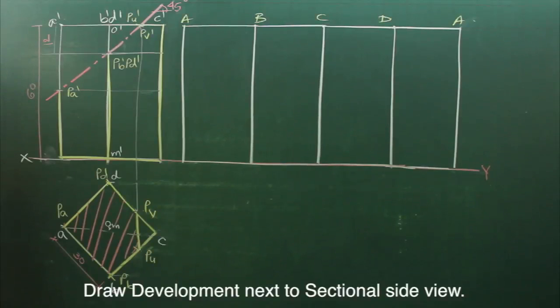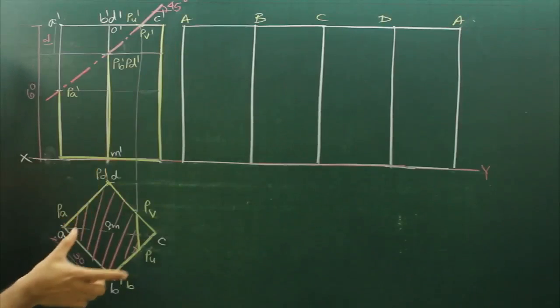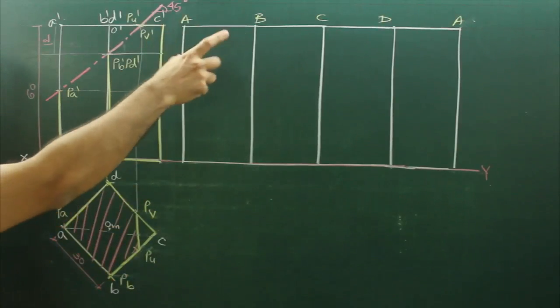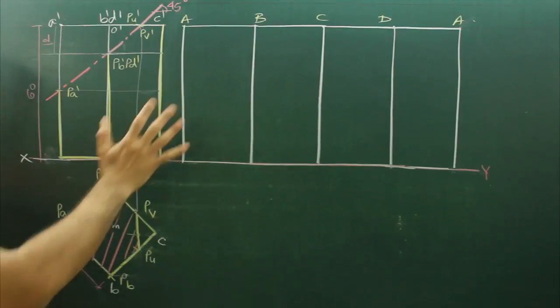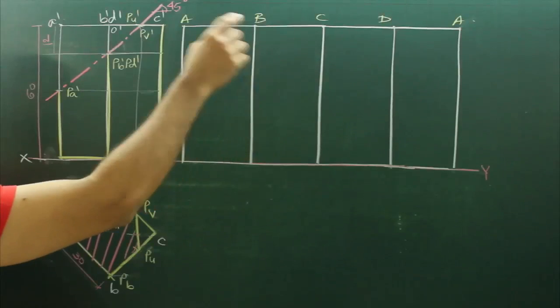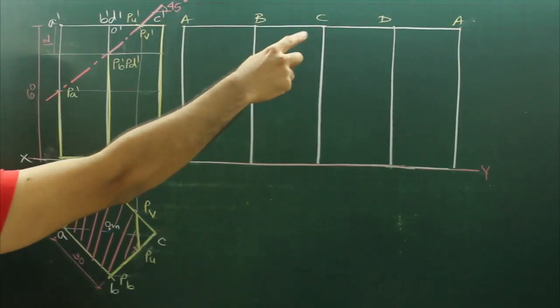So now we draw the development of the square prism. Now in this case, we will take the height and we will take side equal to AB and we will cut four times, because we are doing square prism. So we will cut 1, 2, 3, 4. We will name them as ABCDA.